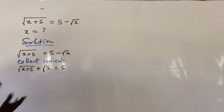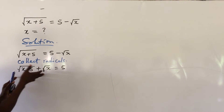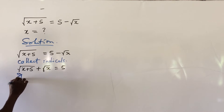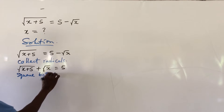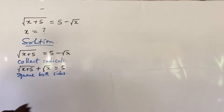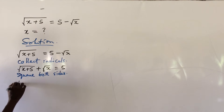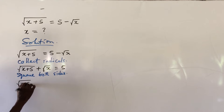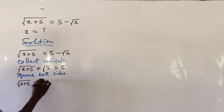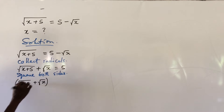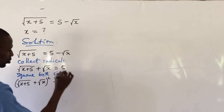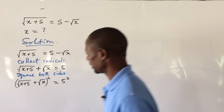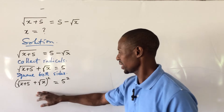From here let's square both sides. If we square both sides we're going to have the square root of (x plus 5) plus root x, all squared, equal to 5 squared.